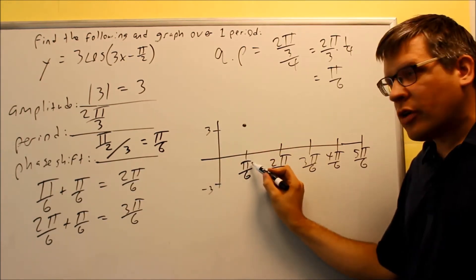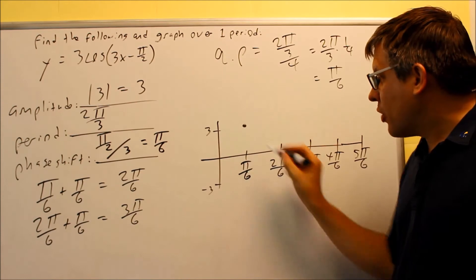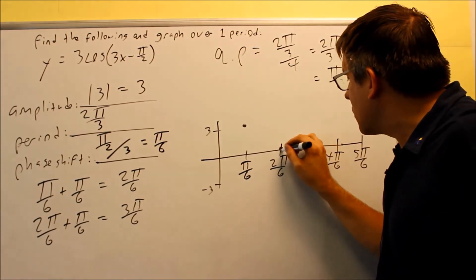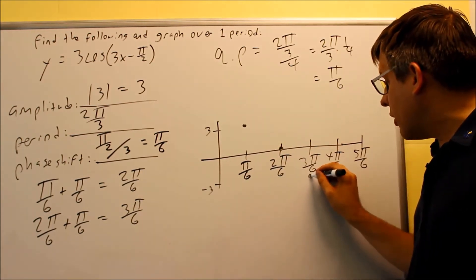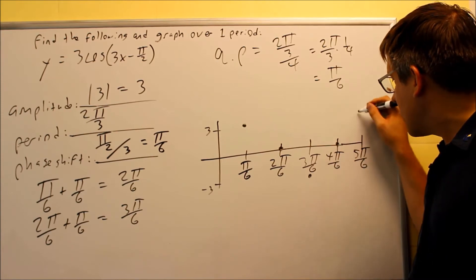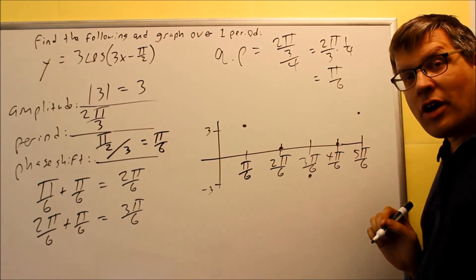It got shifted over to the right. That's why I started at that point. The next point is going to drop down to the x-axis, goes there. Then it'll go down to negative 3, back up to the x-axis, and back up again to the 5π over 6.